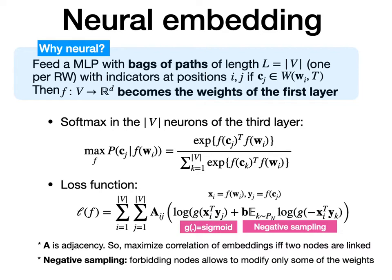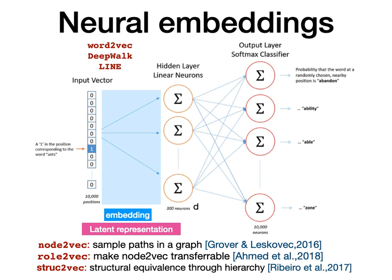This leads to a loss function that says there is a link if there is a correlation between the embedding of node i, which is x, and the embedding of node j, which is y. This is typically called the word2vec approach, with many flavors like DeepWalk, LINE, which were taken from the natural language literature and incorporated into the graph literature as node2vec, role2vec, struc2vec, and many others. The input vector is the location of one node of my graph, and the output of the network is which nodes are statistically in the same context. The weights of the embedding are the weights between the input and the first hidden layer, whose number of neurons equals the number of embedding dimensions.